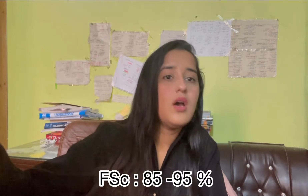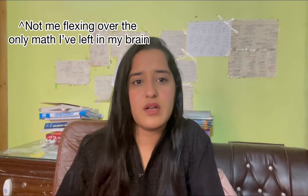Your FSc percentage, inter percentage, or A-level equivalence should be 85% or above — 90% or 95% would be great. For matric, they only take 10% of your matric percentage as part of the aggregate. So if your matric percentage is around 72%, it will contribute just 0.7 out of the total, which is okay.